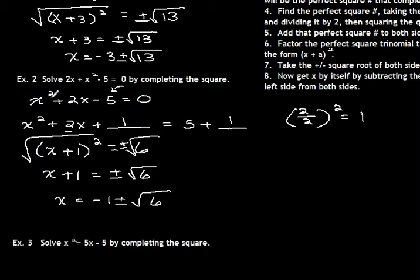Now it's in the form we had before. We can take the square root of both sides — make sure that's plus or minus. We get x plus 1 equals plus or minus the square root of 6. This completing the square method we're going to use later to graph circles and ellipses and parabolas, so it's really important you understand it. Then we get x equals negative 1 plus or minus the square root of 6. Quadratic equations always have two solutions — x equals negative 1 plus the square root of 6, and x equals negative 1 minus the square root of 6.